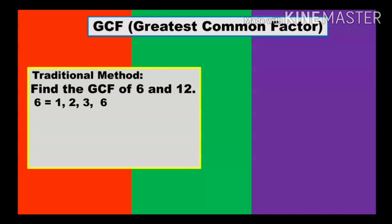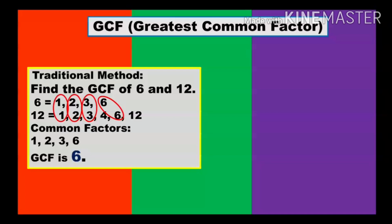So now, let's discuss more about GCF or Greatest Common Factor. Mostly, this traditional method is being used. Example: Find the GCF of 6 and 12. First thing to do is to list down the factors of each number. The factors of 6 are 1, 2, 3, 6. List down also the factors of 12: 1, 2, 3, 4, 6, and 12. Now, identify the common factors both can be seen in the two numbers: 1, 2, 3, and 6. Among the common factors, the greatest is 6. That's why the GCF of 6 and 12 is 6.